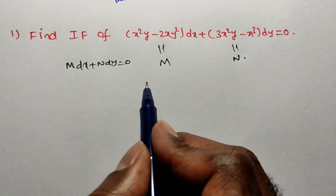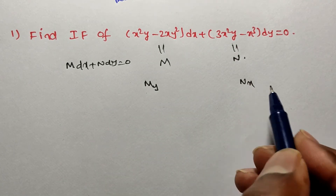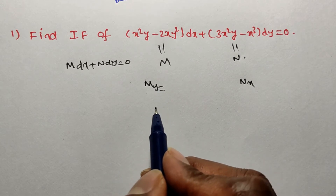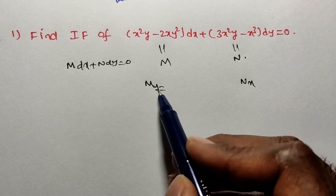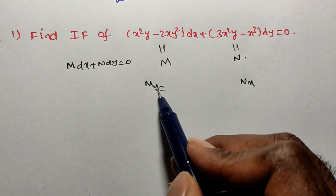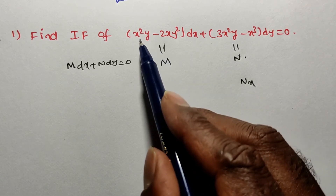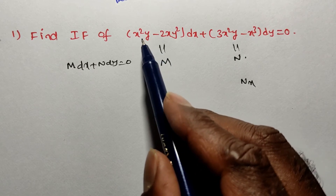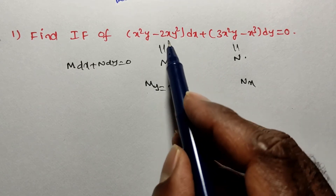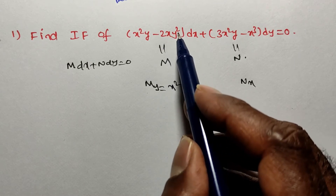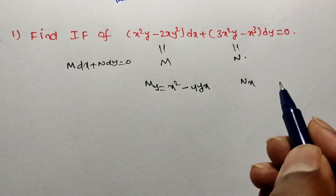Now we have to find dou M by dou y and dou N by dou x. While differentiating M partially with respect to y, we treat all other variables as constants. So x squared is a constant, y derivative is 1, giving x squared. Then minus 2x is a constant, and y squared derivative is 2y, giving 4xy. So dou M by dou y is x squared minus 4xy.